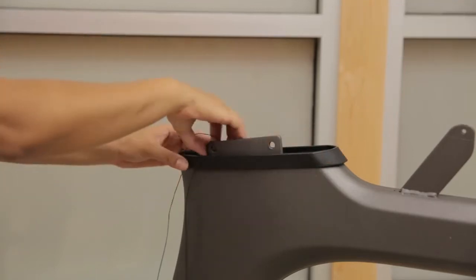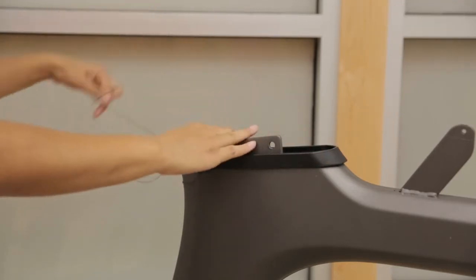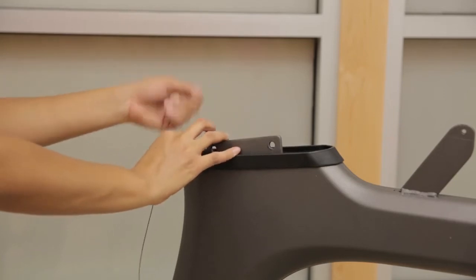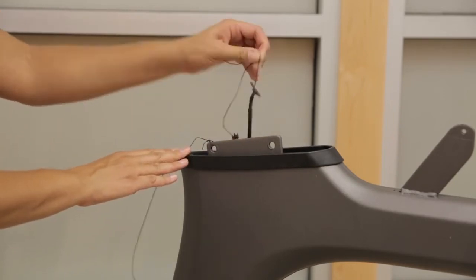Set the console mast boots in place, and then carefully pull the lead wire at the top of the right console mast until the console cable reaches the top of the mast.